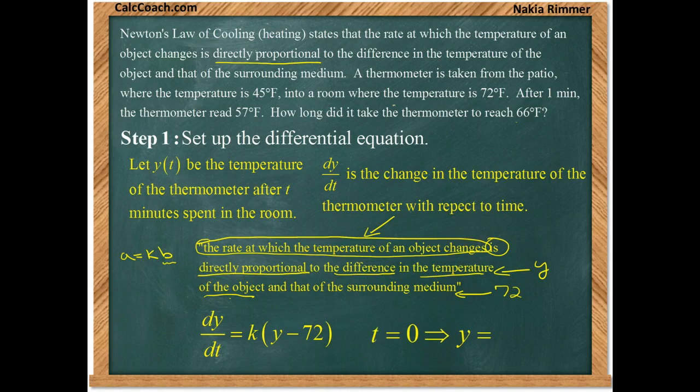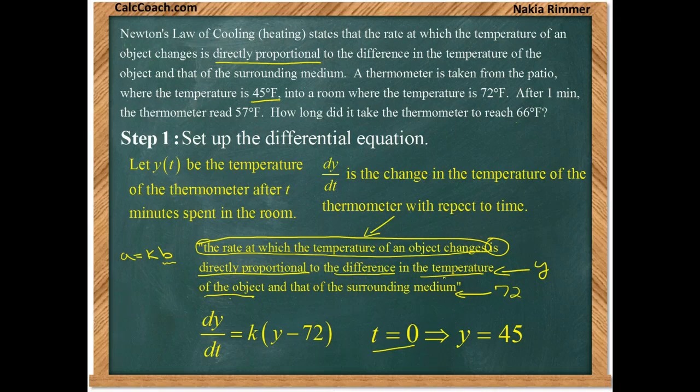All right, great. Now when it was brought into the room, the thermometer read 45 degrees. Well that's an initial condition: when T is 0, Y is 45. So the setup is done. We just have to solve this differential equation. We'll start that on the next slide.